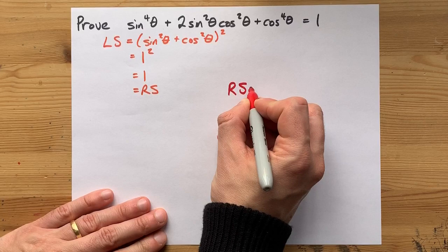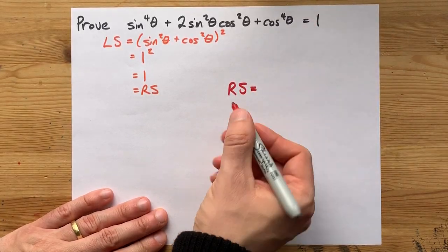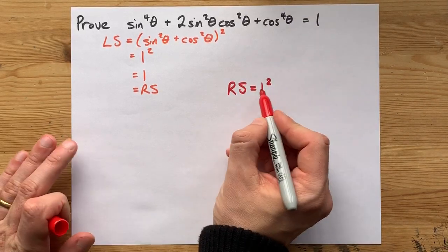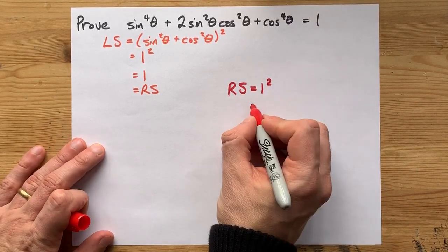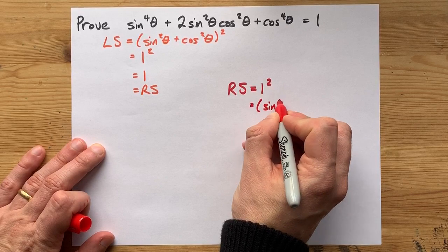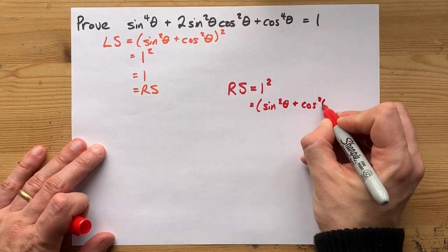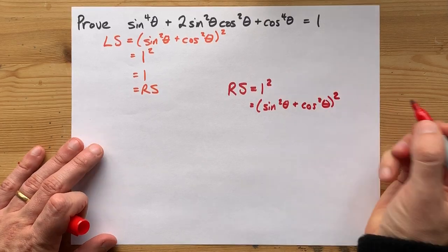You can start with the right side, which was 1, and be like, oh, that was 1². Now I'm going to replace that 1 with sin²θ + cos²θ. 1 squared, that's the Pythagorean identity.